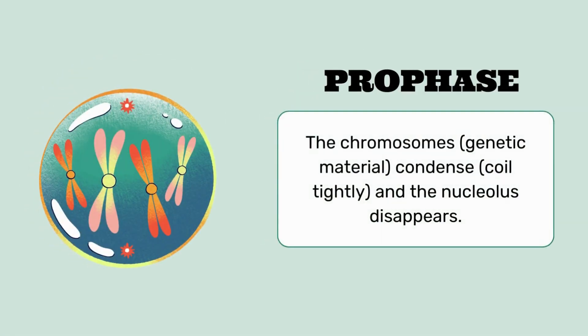The second phase is prophase. The chromosomes' genetic material condenses quite tightly and the nucleolus disappears. You can see in the diagram that chromosomes condense and the nucleolus disappears and is removed. It is divided into pieces, and you can see there is no nucleus.